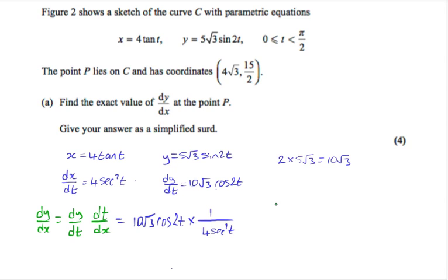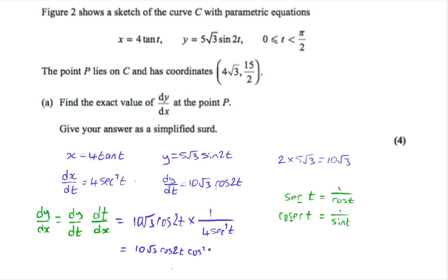Remember to use the third letter rule if you're not sure what sec and cosec of t is. Sec t — the third letter is c, so it's 1 over cos. Cosec t — the third letter is s, so it's 1 over sin. So sec squared t is 1 over cos squared t, meaning 1 over sec squared t gives us cos squared t. So we have 10 root 3 cos 2t cos squared t over 4. We can divide the 4 and the 10 by 2 to get 5 root 3 over 2 cos 2t cos squared t.